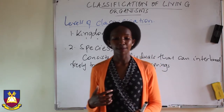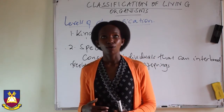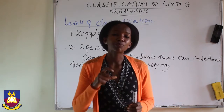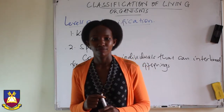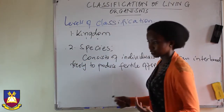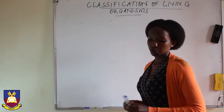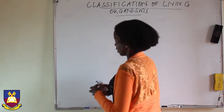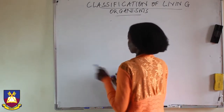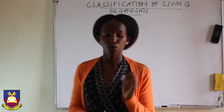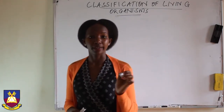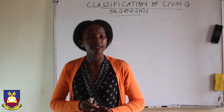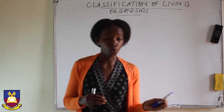Let us look at examples of classifications of groups in different organisms. We have our groups, which we also call the hierarchy system. Hierarchy is about order — an arrangement from one level to the next.